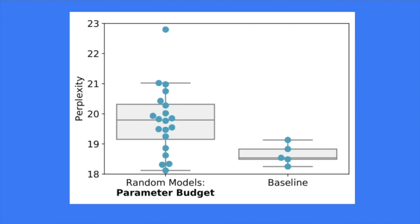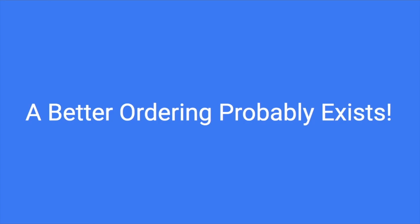They show this on a distribution map. The standard deviation of the random models is large — some perform very well, even better than the standard transformer, while some perform quite poorly. The conclusion so far: a better ordering probably exists.